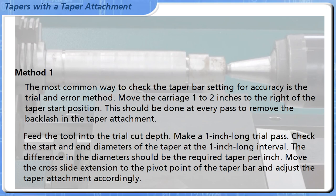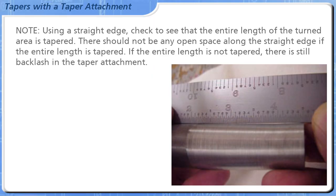Move the cross slide extension to the pivot point of the taper bar and adjust the taper attachment accordingly. Note, using a straight edge, check to see that the entire length of the turned area is tapered. There should not be any open space along the straight edge if the entire length is tapered.